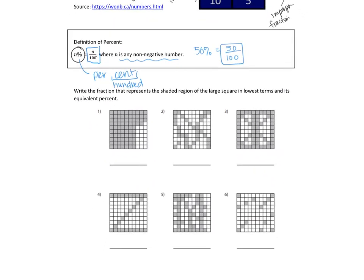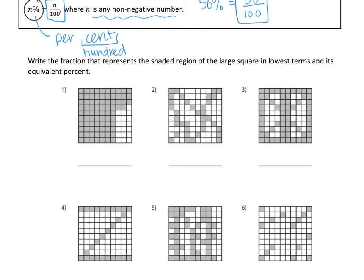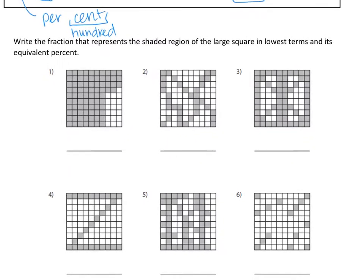So we're going to look at some 100 grids down below, and we're going to first write the fraction that represents the shaded region, and then write it as its equivalent percent. I'll give you a little bit of time to rewrite these — you should pause it and try. Now that you've tried, I'm going to count through these. We have 10 lines here, so that's going to be 30.